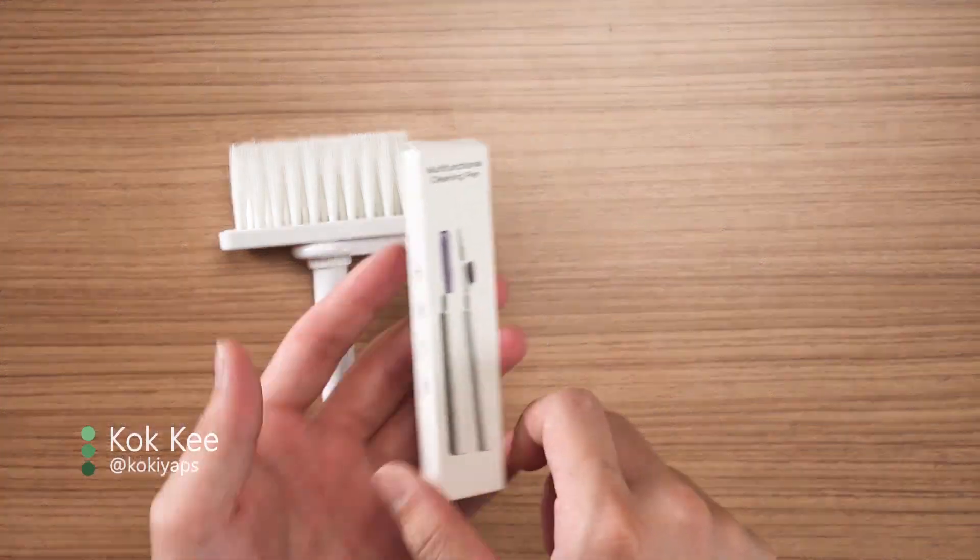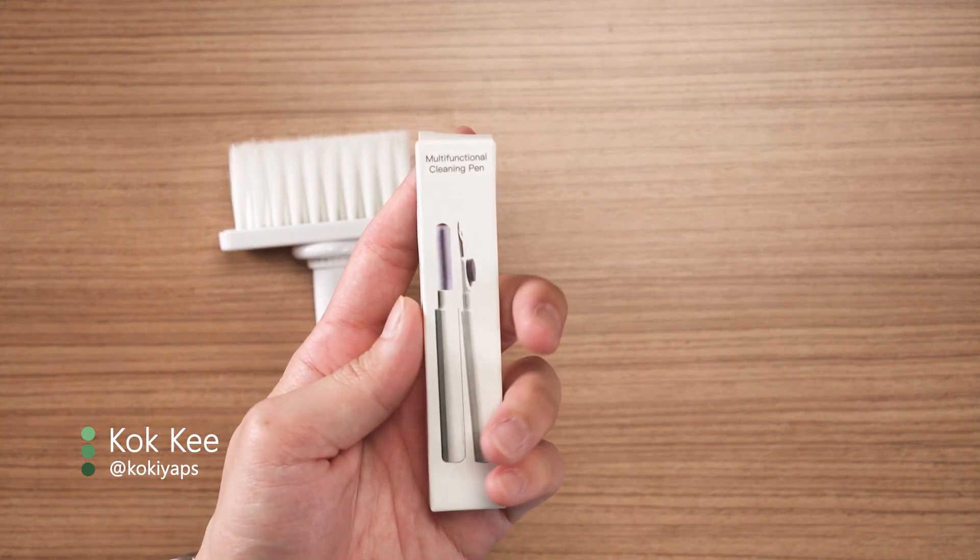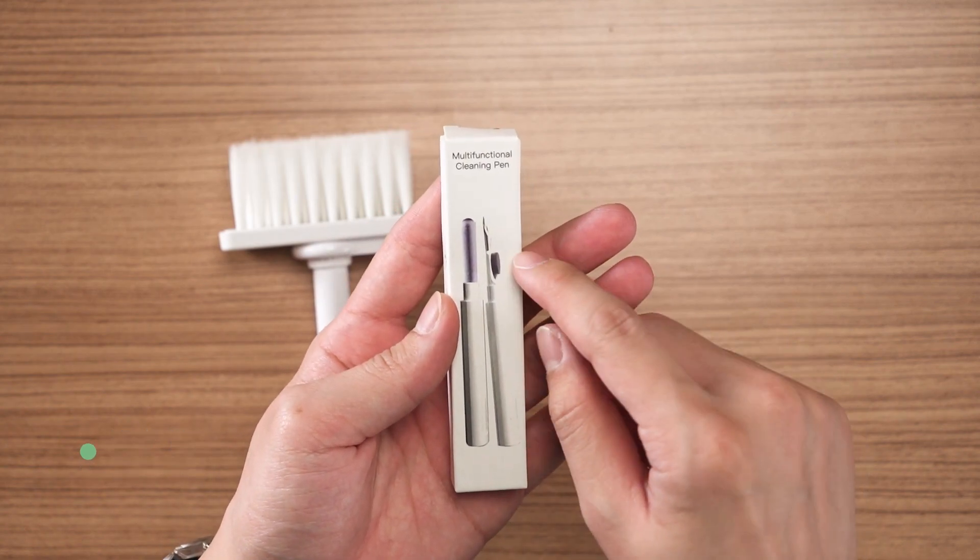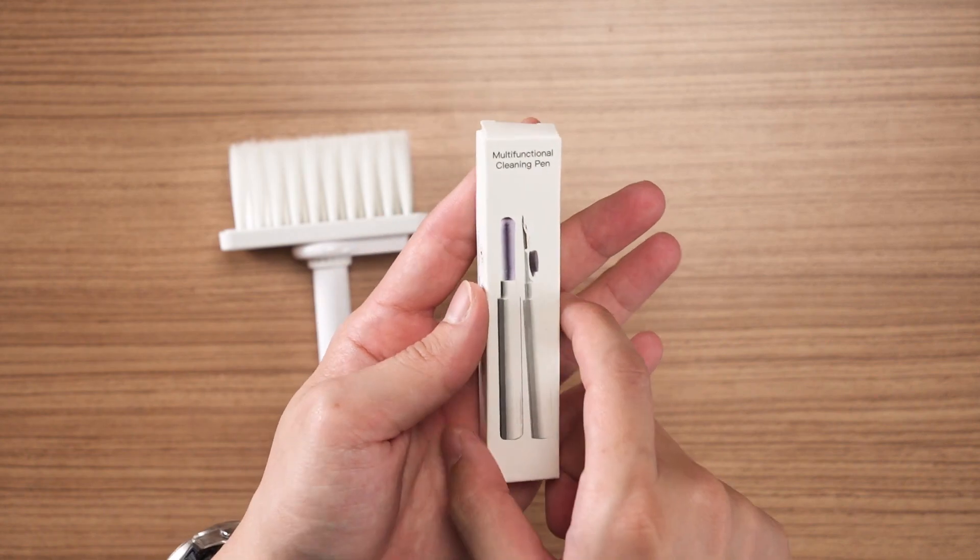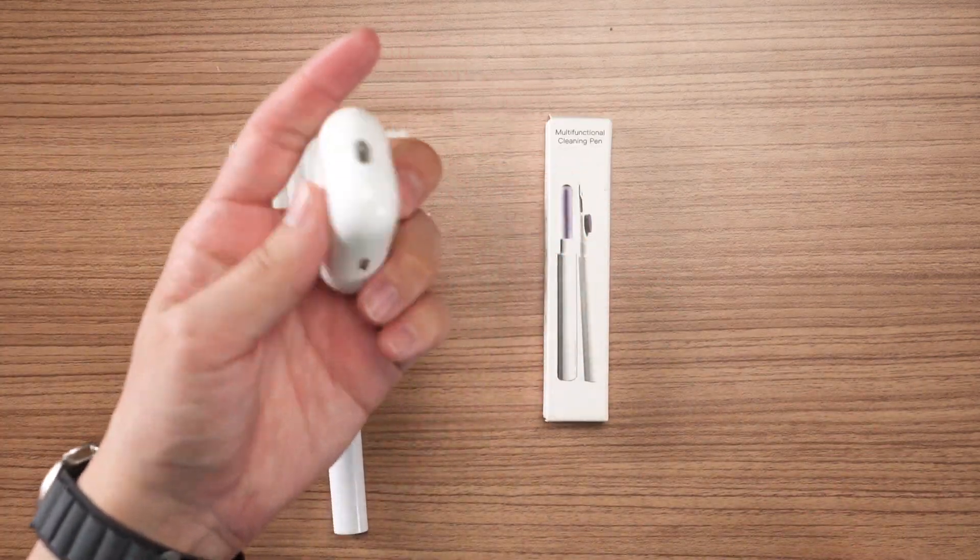A while ago, I bought this multifunctional cleaning pen. Technically, as you can see here, it has a metal tip, a brush, and then this pole thing, which is actually used to clean your earbuds.